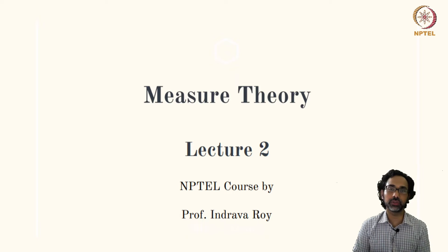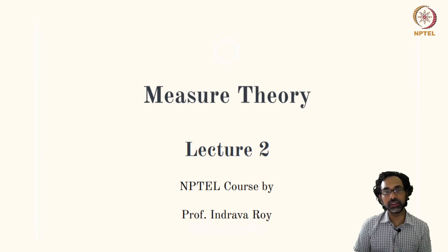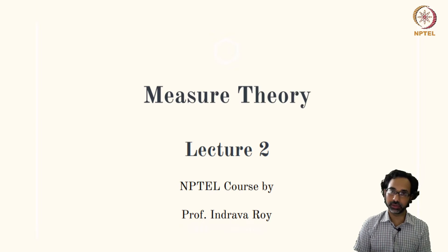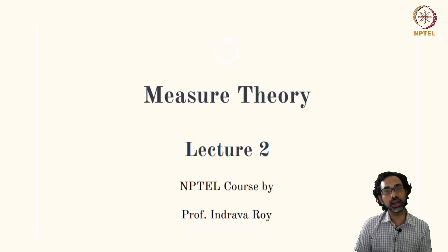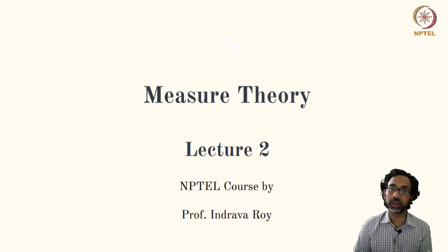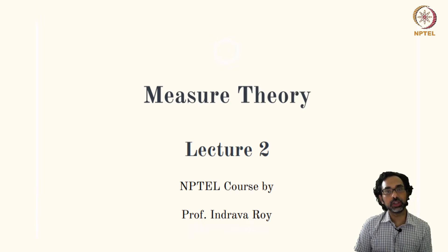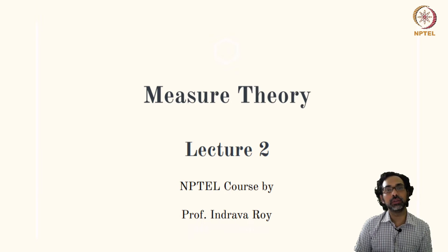In the last lecture we saw the notion of cardinality of a finite set and we saw that the definition of cardinality is not ambiguous, meaning it is well defined. We also showed that cardinality follows the finite additivity property: if we take two disjoint non-empty sets, then the cardinality of their union equals the sum of the cardinalities of the individual sets.